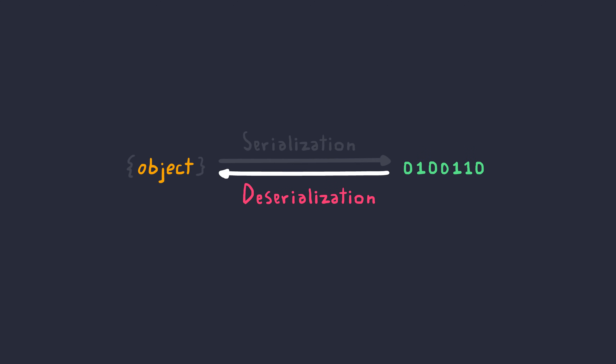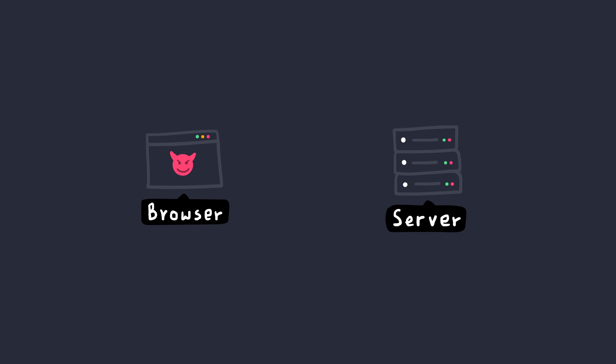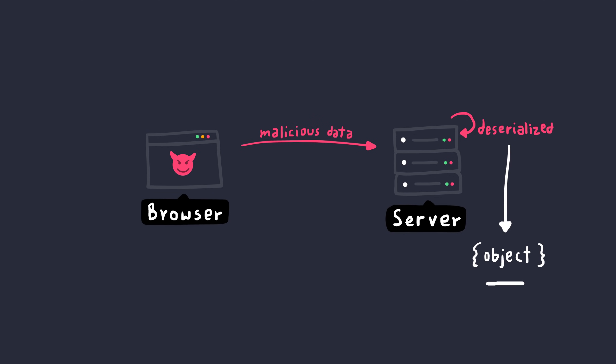Now the question is, why is deserialization a problem? Well, as you can see, we're essentially converting a stream of bytes to an object. We've got to be careful when we do that, especially when accepting arbitrary input. The problem is that if the user's input contains malicious serialized data and this data is deserialized on the server side, it turns the user's input into an object. But what if these objects contain special methods that can execute arbitrary code on deserialization? Well, that sounds like a problem.